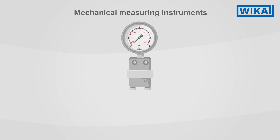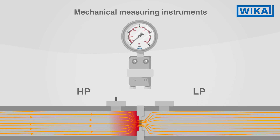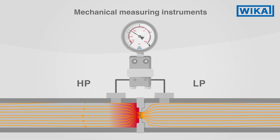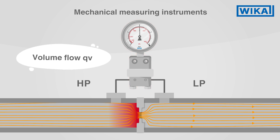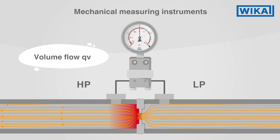With flow measurement, for example, the pressure difference before and after an orifice is measured. This measured data enables the volume flow to be calculated reliably.